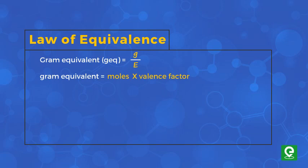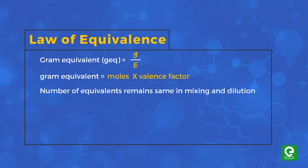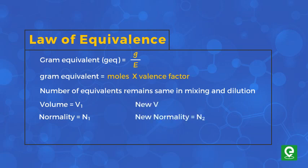An important thing to remember is that the number of equivalents remains the same during mixing and dilution. That is, if volume V1 and normality N1 are changed such that the new normality is N2 and new volume is V2, then N1V1 = N2V2.